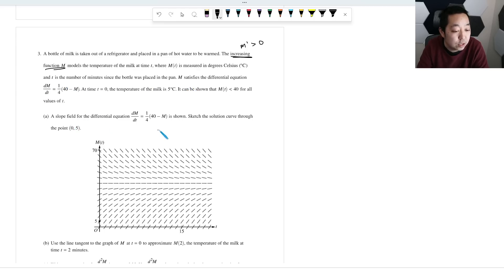A slope field is given. Sketch the solution curve through 0,5. So 0,5 is here. And you're just literally, I'm going to pick a different color so it's easier to see, you're literally just going to follow that kind of curves. And it looks like it gets closer and closer to that horizontal line like that. So there we go. That one should be an easy one.